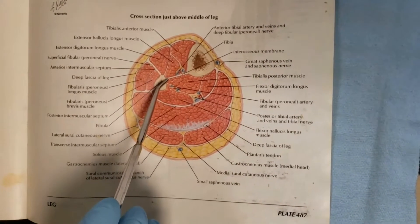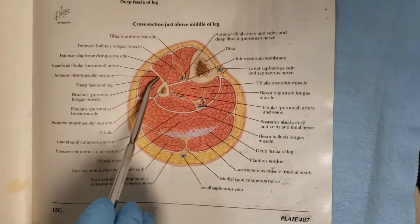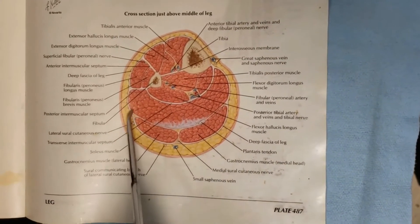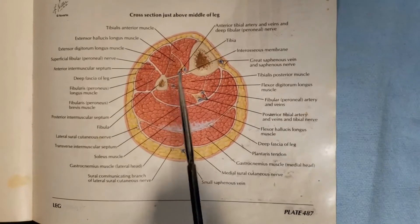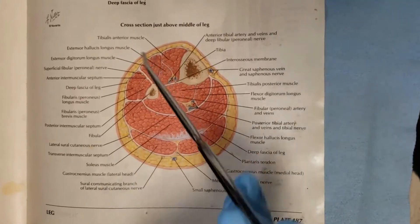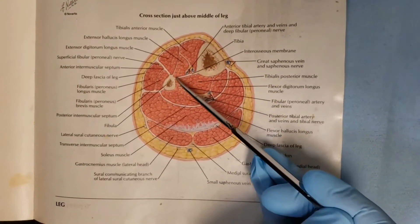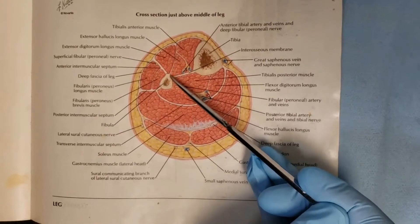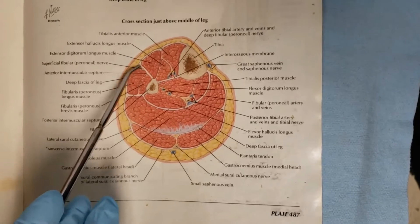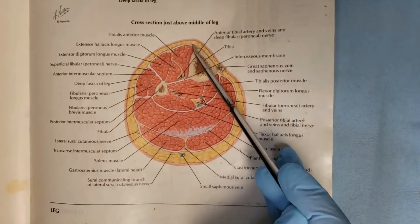There are two other compartments in the leg: the lateral compartment, which is very small, and the very large posterior compartment. To repeat again the boundaries of the anterior compartment: the lateral surface of the tibia, the interosseous membrane, the medial part of the fibula, the anterior intermuscular septum, and the crural fascia, or the deep fascia of the leg.